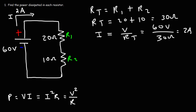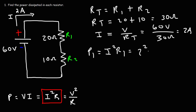Now that we have the current, let's use the formula P = I²R to calculate the power dissipated by each resistor. Starting with the first resistor, it's going to be the current flowing through it squared times R1. So it's 2 squared times 20 ohms. 2 squared is 4, times 20, that's 80 watts dissipated by the first resistor.